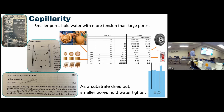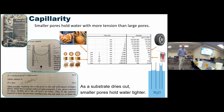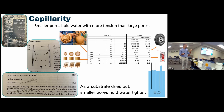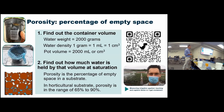As the substrate dries out, small pores hold water tighter. Your substrate is a collection of different pore sizes — large and small. The big pores empty first, and as they do, the smaller pores hold water with increasing tension. So the more the substrate dries, the harder it holds on to water at higher tension.